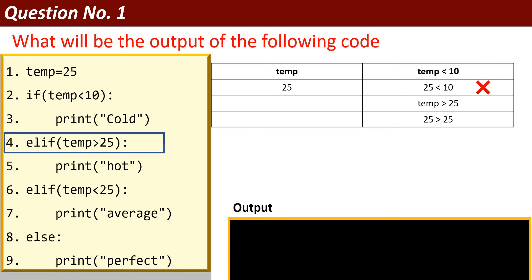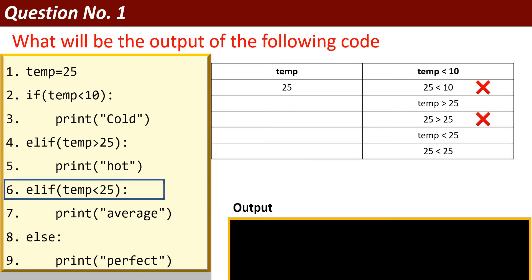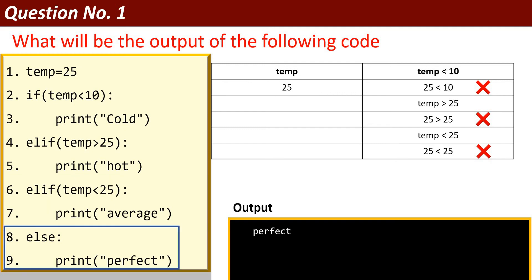The elif condition checks if temperature > 25. The value of temp is 25, and 25 is not greater than 25, so this condition is also false. Next, elif checks temp < 25. The value of temp is 25, and 25 is not less than 25, so this condition is also false. Since none of the conditions are true, it moves to the last statement — the else part — without checking any further condition.